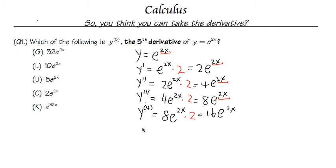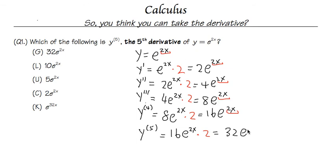For the fifth and final derivative, we start with 16e^(2x) and multiply by the derivative of 2x, which is 2. So 16 times 2 is 32, giving us 32e^(2x). Looking at the answer choices, the first choice is the answer. Good luck for the rest!